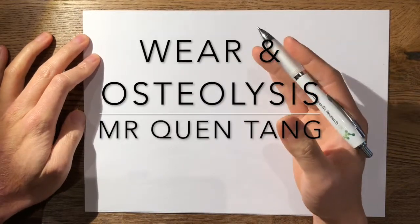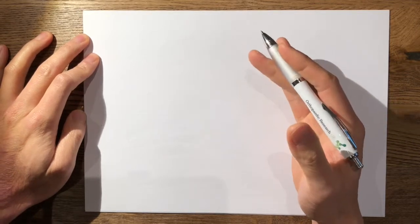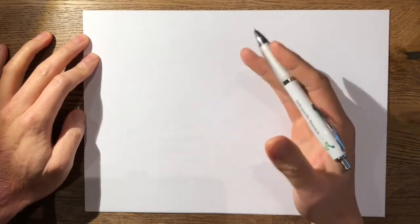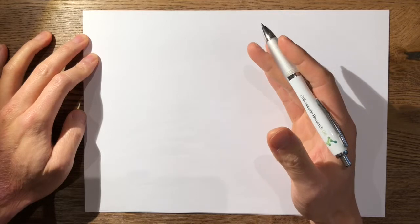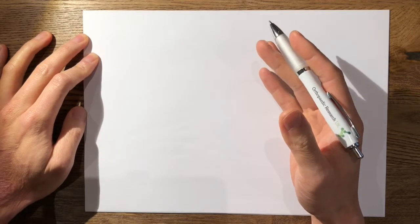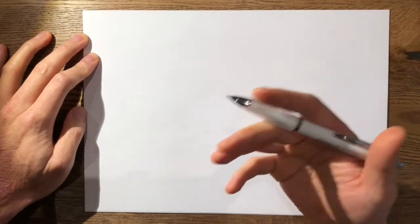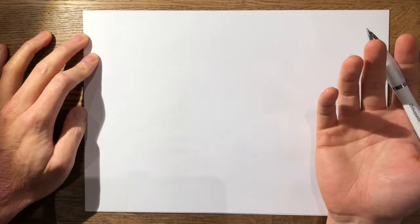In this video I'm going to talk about wear and osteolysis, and this is something you really need to know quite a lot about because it can crop up in any part of your basic science viva. In my basic science viva, I had an image of a worn polyethylene cup and the opening question was: what is this and what do you think has happened?